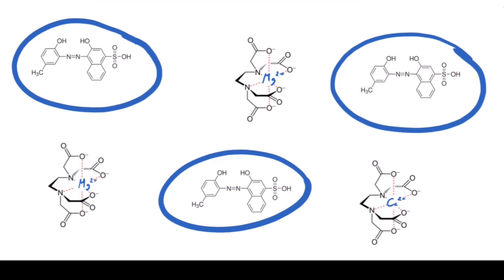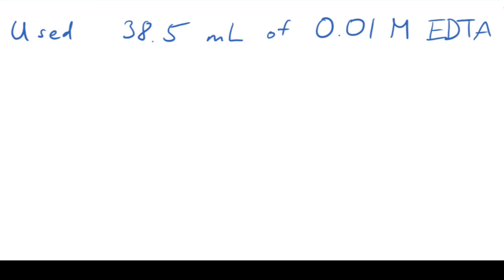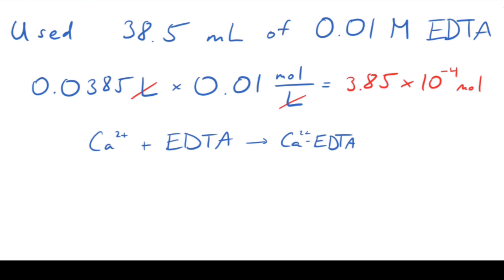At this point, we measure the volume of EDTA used. In our example, we use an average volume of 38.5 milliliters of the 0.01 molar EDTA to titrate our aliquot. This is equal to 0.0385 liters. This, multiplied by the concentration of EDTA, 0.01 moles per liter, gives us the number of moles of EDTA used.